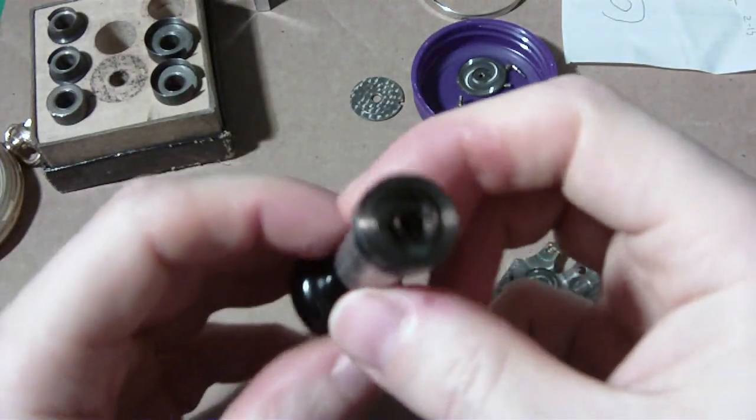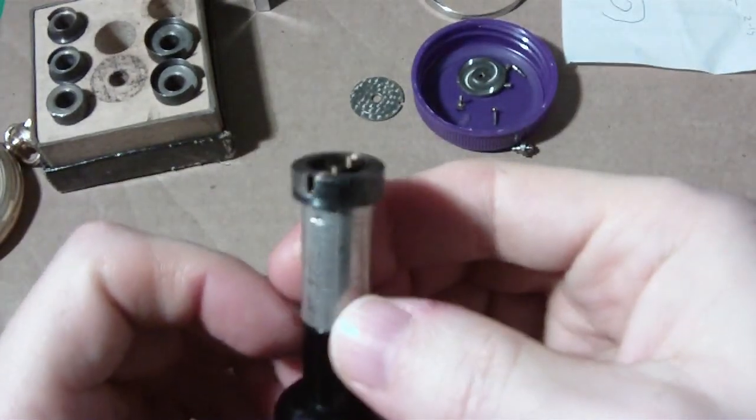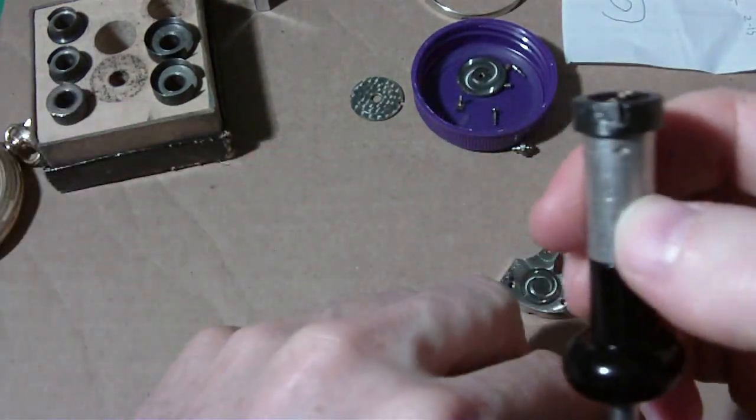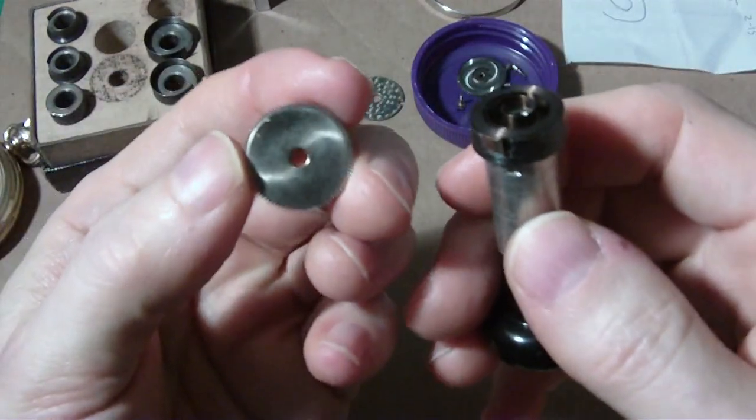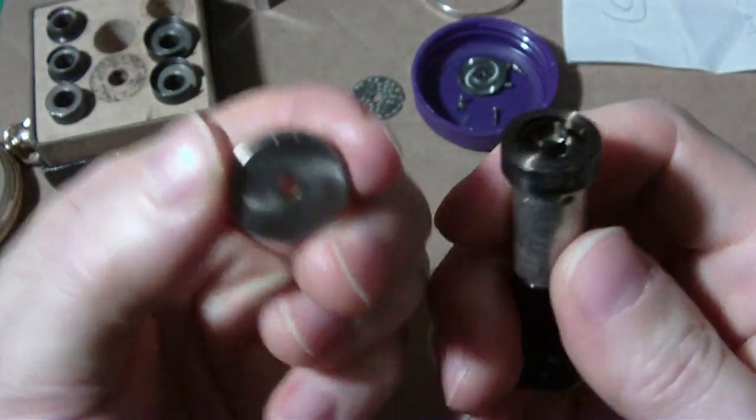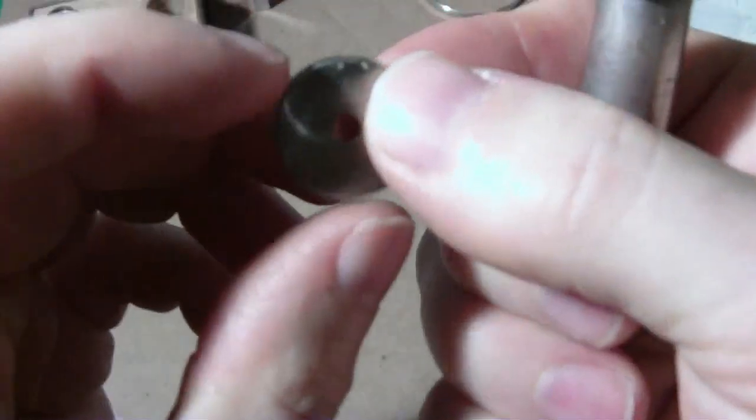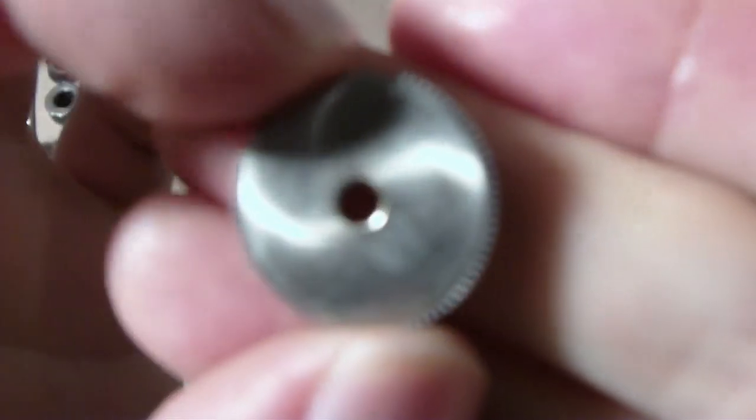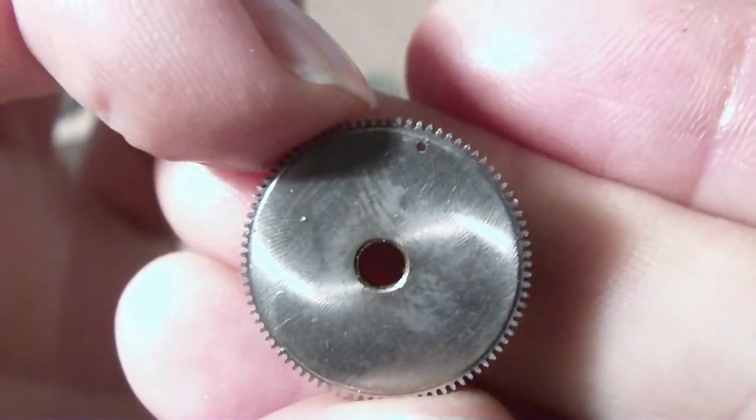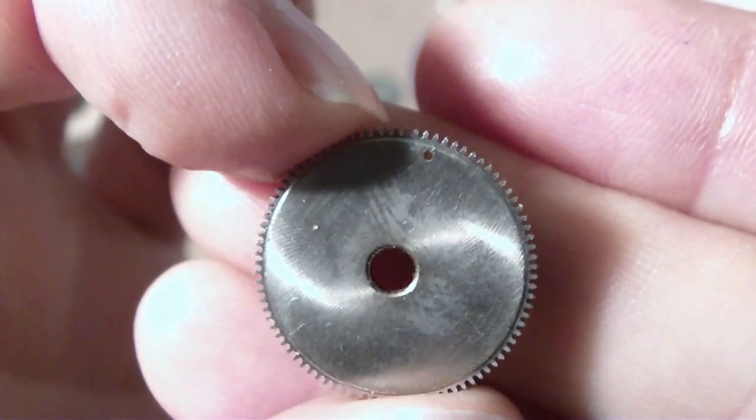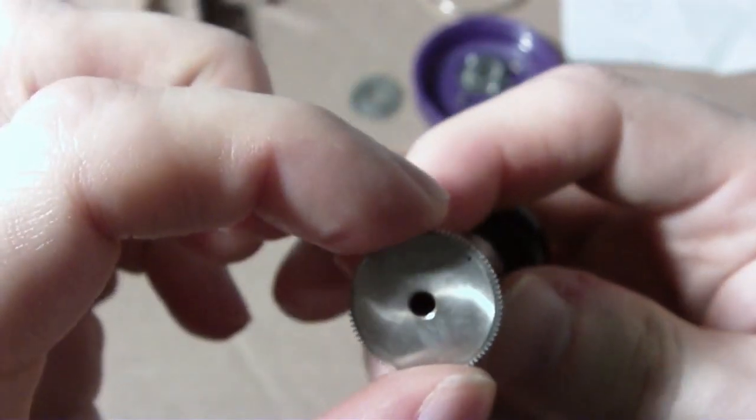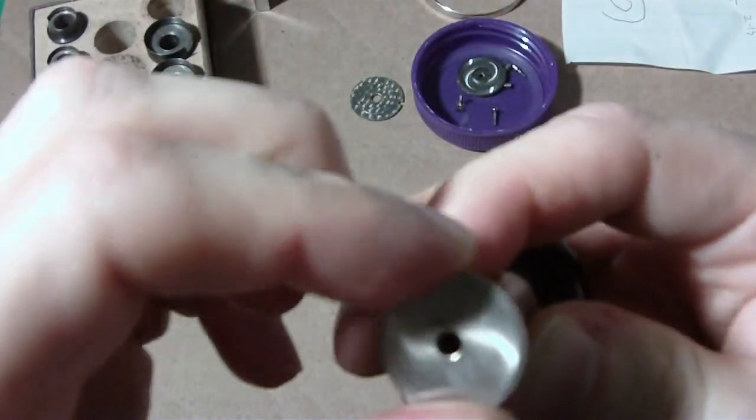I have the mainspring wound up inside the tool with the T-end sticking out. I take the barrel, there's a little hole in there you can see, and the T-end goes in that hole. Let's see if I can get it in. Okay, I got it in the hole.